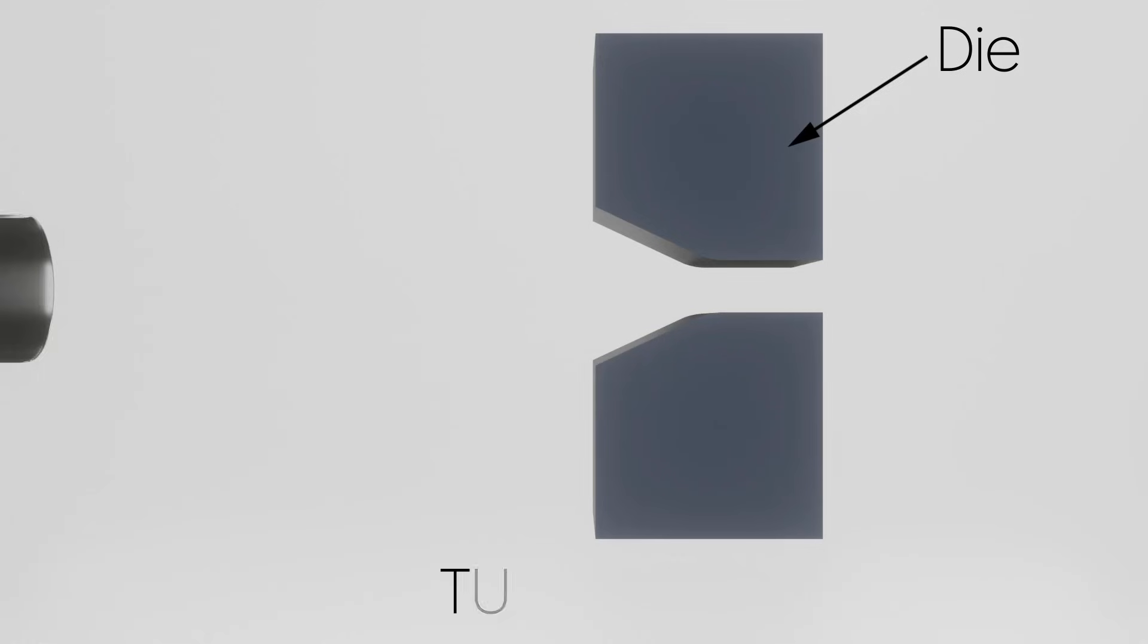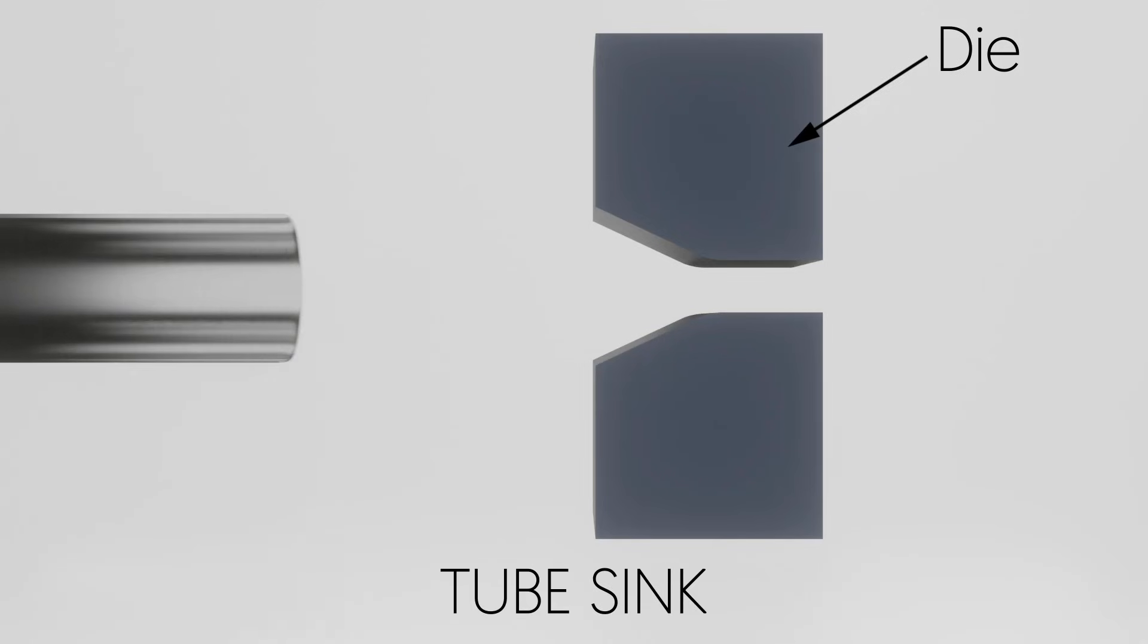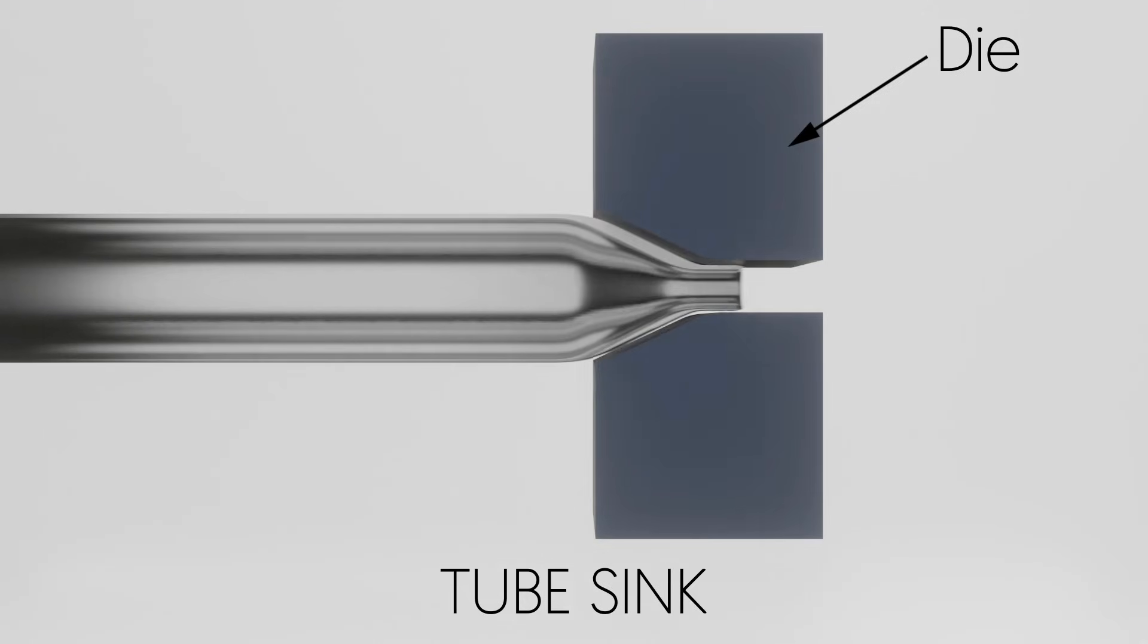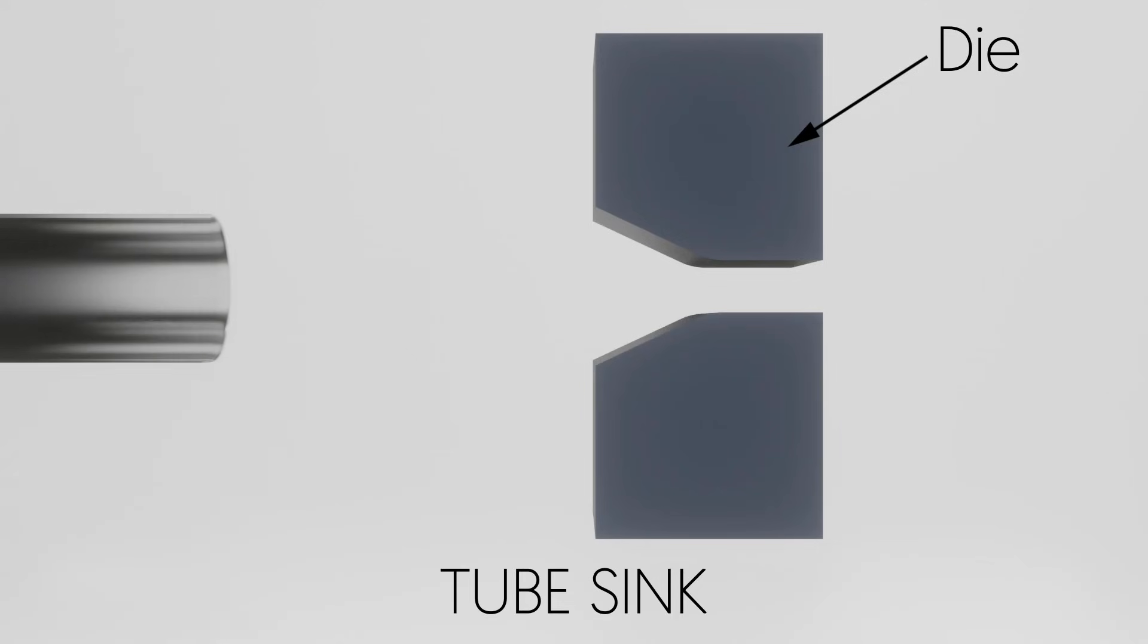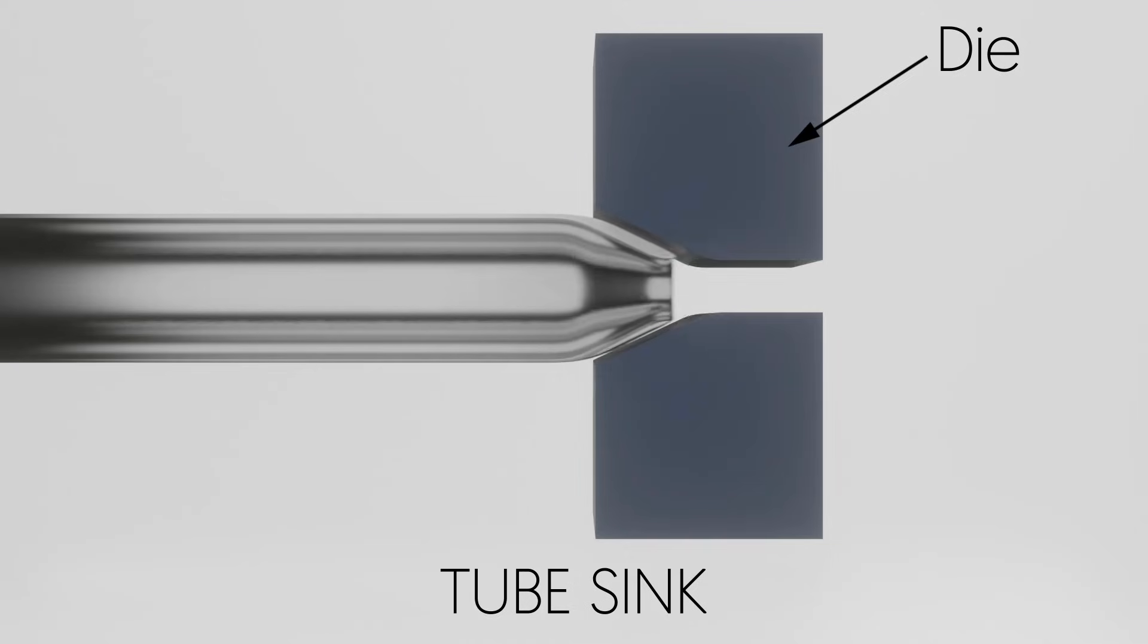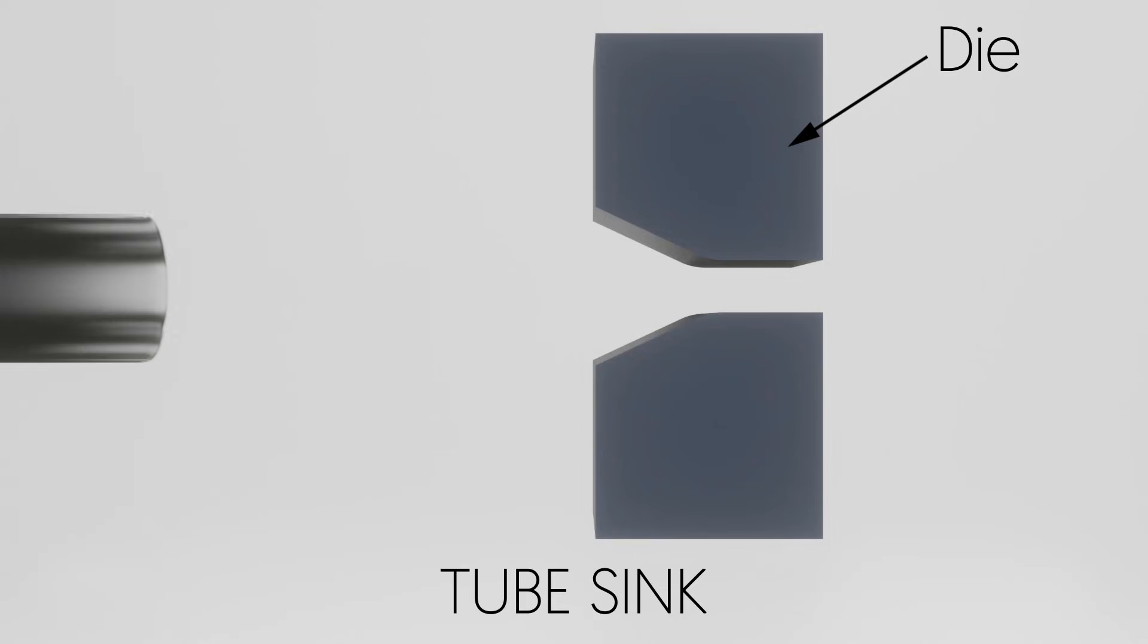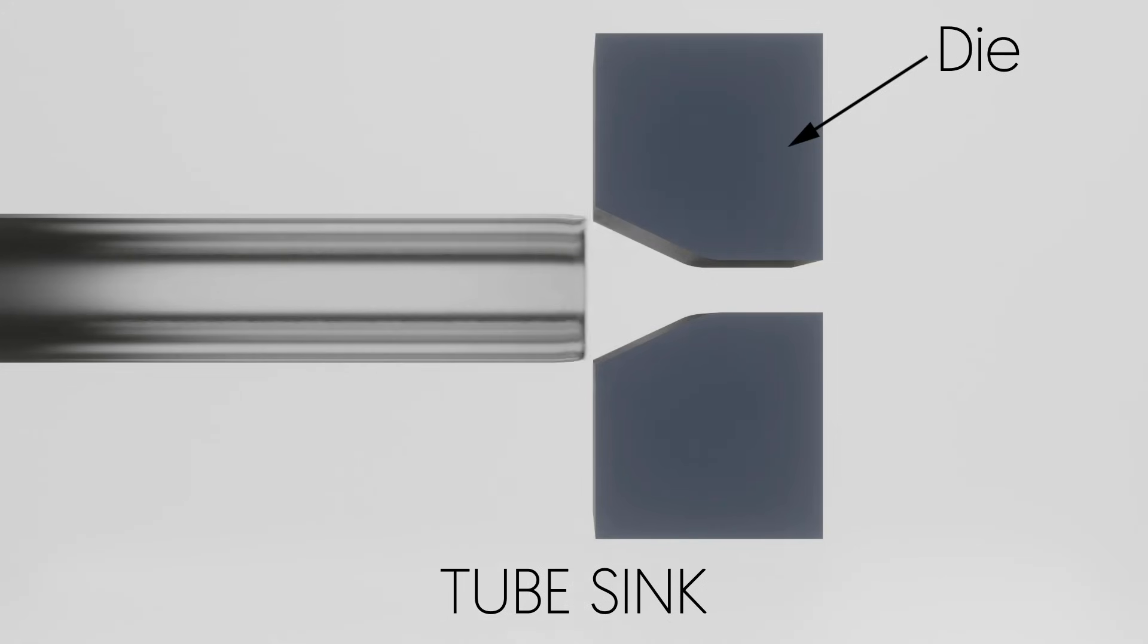What are the types of tube drawing? Tube sinking: in this process, a tube is simply drawn through a die to reduce its outside diameter and inside diameter. As you can see, there is no internal support provided inside, so the surface finish produced inside the pipe or tube is uneven and the wall thickness increases.